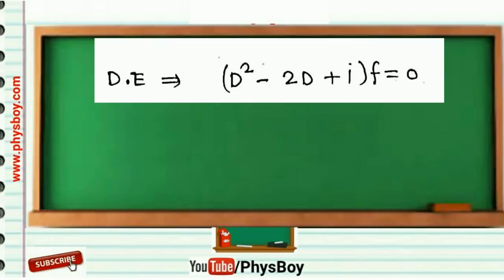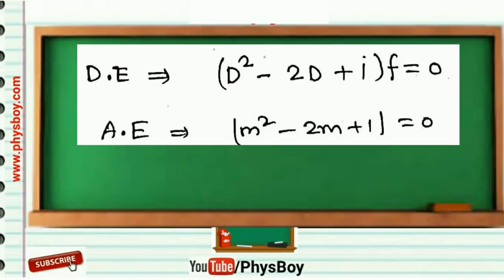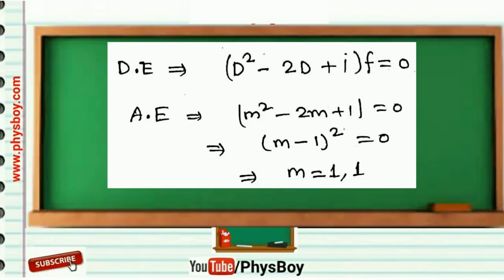The differential equation can be written using D operator like (D² - 2D + 1)f = 0, and the auxiliary equation will be m² - 2m + 1 = 0. By solving this second-order equation you get m = 1 and 1.